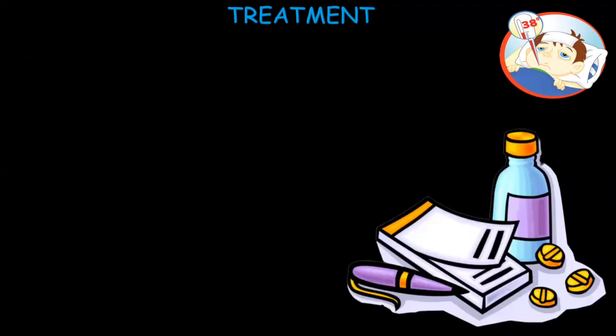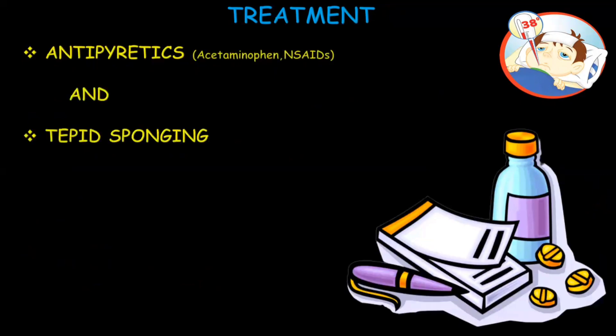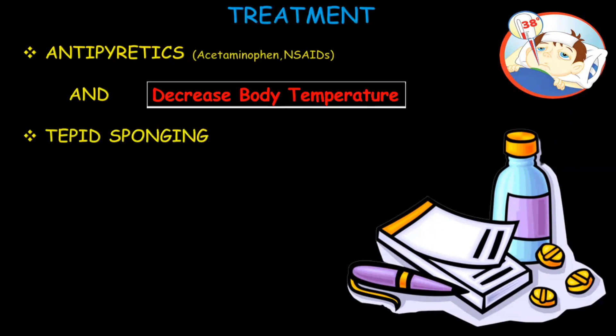For treatment, we use antipyretics and tepid sponging to decrease body temperature. However, treating the underlying cause is the main goal for managing a febrile patient. There are two types of fever to be aware of: neutropenic fever and fever of unknown origin.